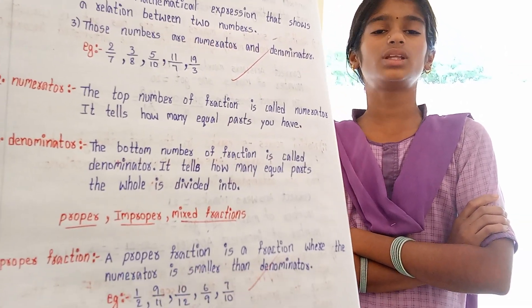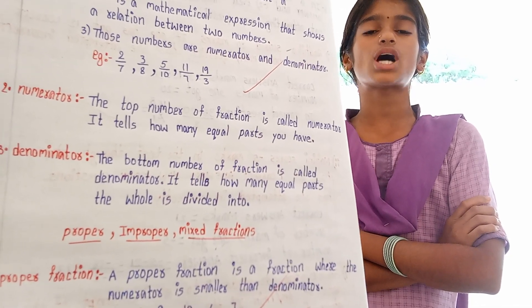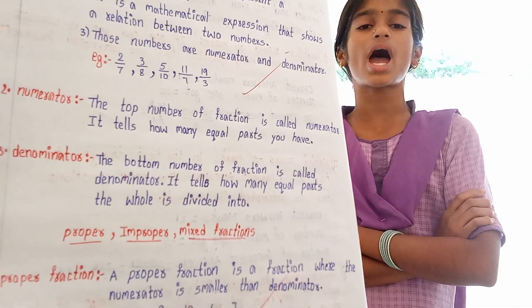Define the numerator. The top number of a fraction is called the numerator. It tells how many equal parts you have.